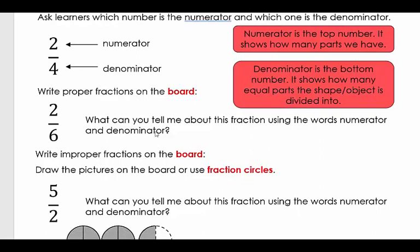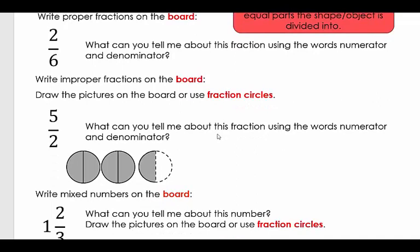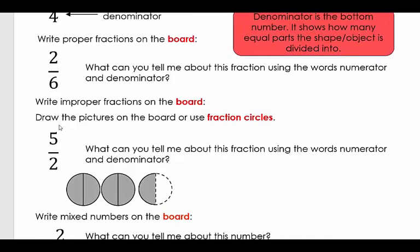So the next one that we're going to look at is where we have our improper fractions. So the improper fraction is where the numerator is bigger than the denominator. Now, if we look at it, you can see five halves, but five halves means two and a half. How do I know that? Because if I'm going to divide five by two, I will get two and there's one left. Then it's a half. So it's two and a half shown the same as shown in this picture.